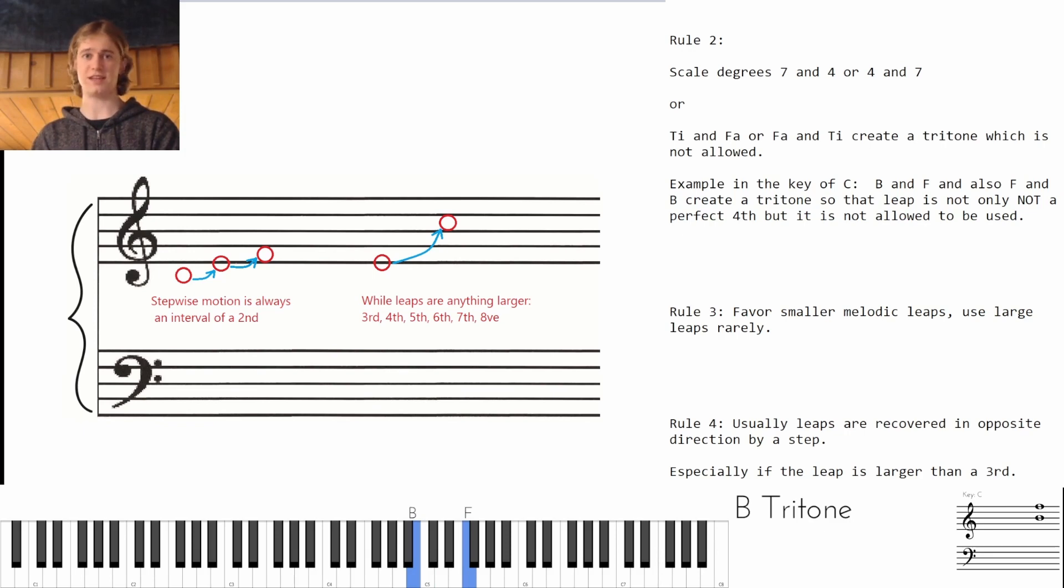So we have that tritone, so that's a seven to four or a Ti to Fa. But the thing is, like I taught in my tritone video, a tritone can be inverted and it is still a tritone. So if we're going from now four to seven we still have a tritone, in other words Fa and Ti, or in this case simply F and B.